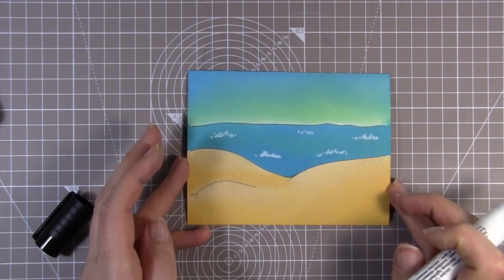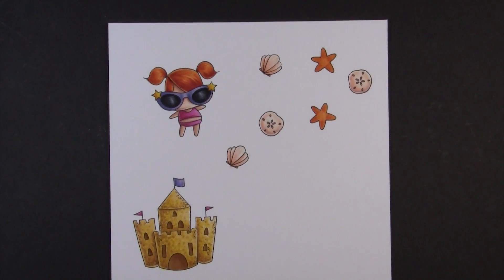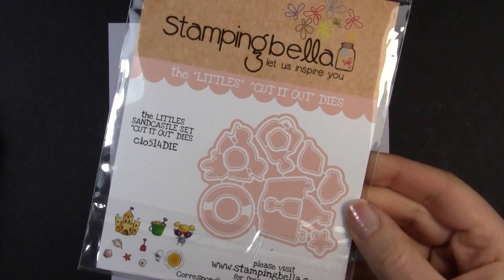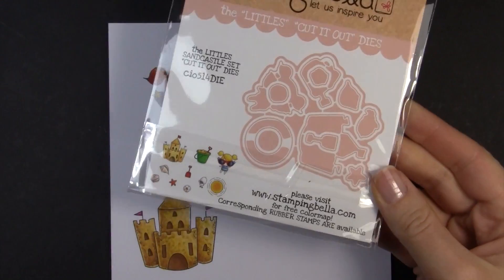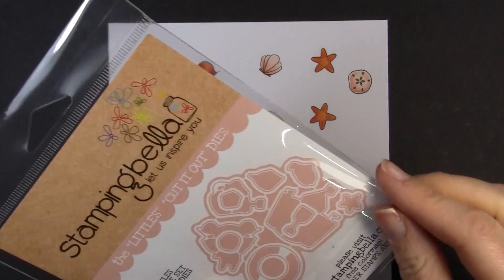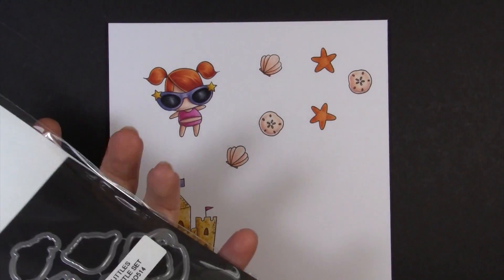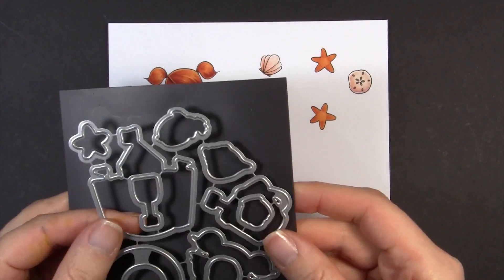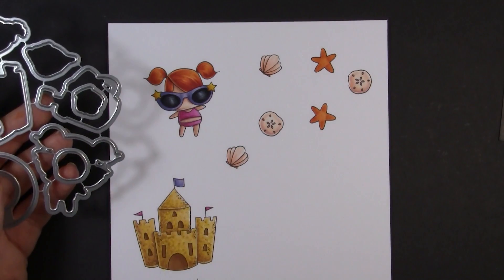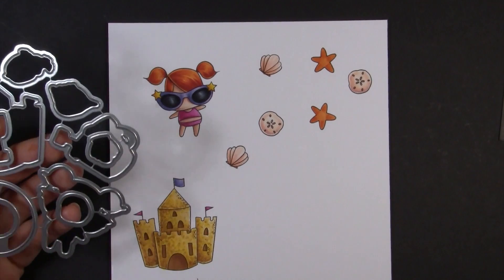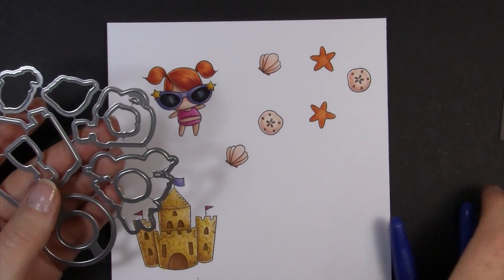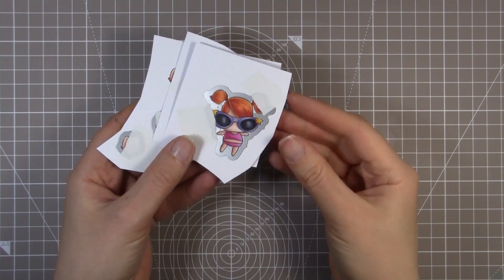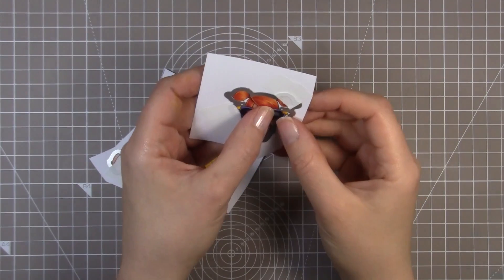I'm then going to show you that I die cut the images that I Copic colored. Here's the images that I colored. I colored several of the shells so that I could include them inside the shaker as part of the shaker element. I'm die cutting everything here using the coordinating die set for the Littles Sandcastle set. I had to break apart, well I hadn't actually used the dies previously, so I had to go ahead and cut those all apart using the snip tools.